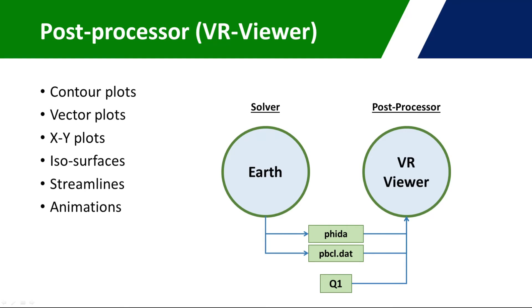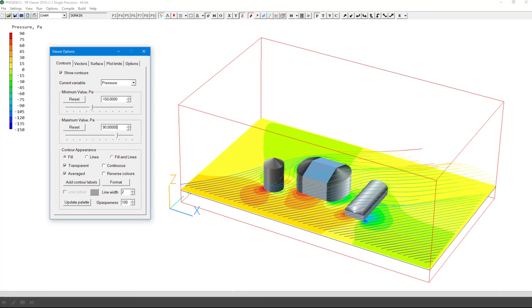The viewer is your primary method of judging and analysing the solution, and the result file contains additional details to help ensure your results are correct. Here is an example of the VR viewer window — the same case you saw earlier, with streamlines and a pressure contour plot.